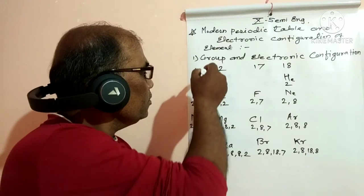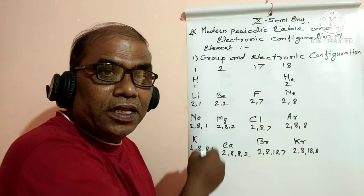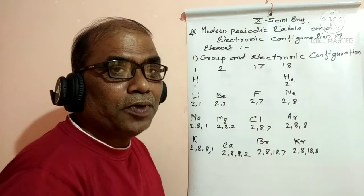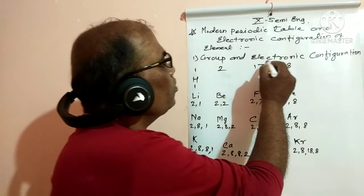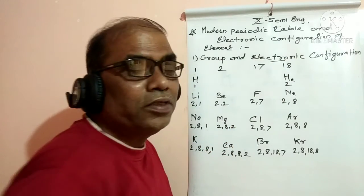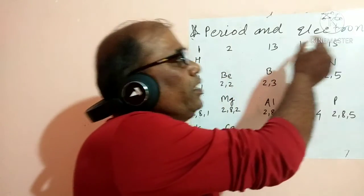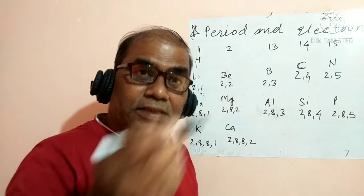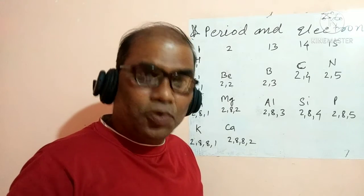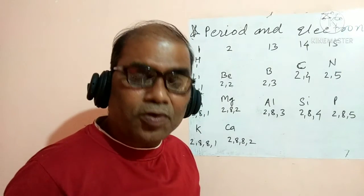As we go down a group from top to bottom, there is an increase in the number of shells. One more shell is added going down. For group 1, each element has one valence electron, and group 2 elements have two valence electrons in the outer shell.